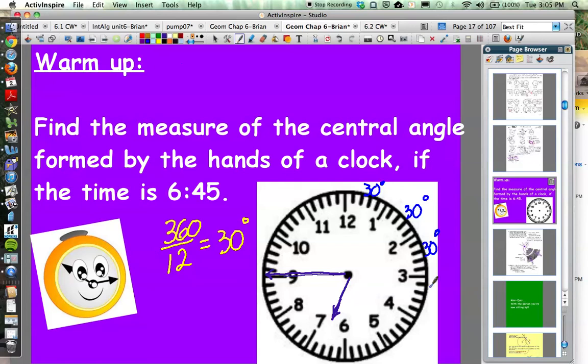So if we think about the angle formed between the hands of the clock, we can think about the arc measure out here. So we know we have 30 degrees between the 8 and the 9. We know we have 30 degrees between the 7 and the 8. So we have at least 60 degrees in this angle.